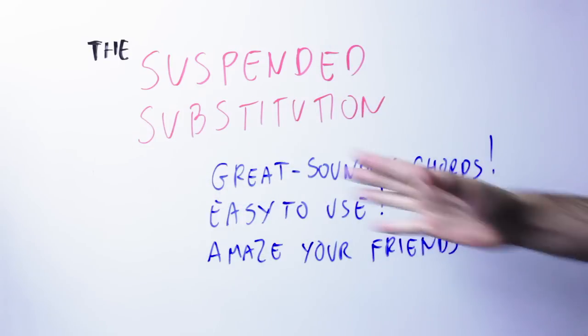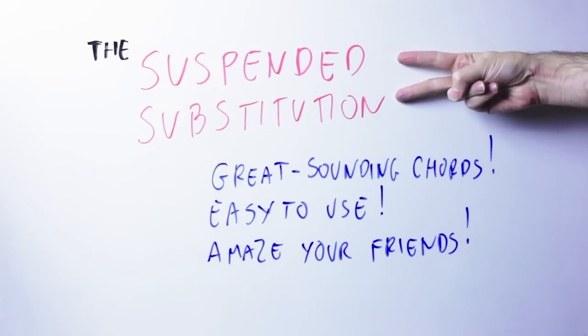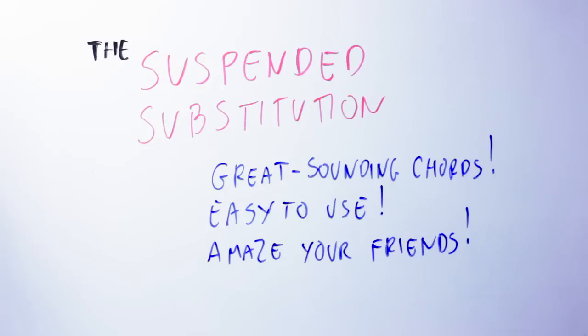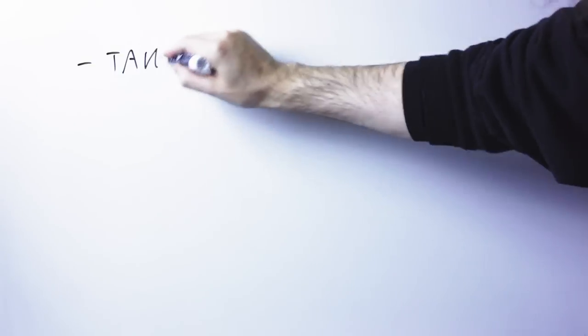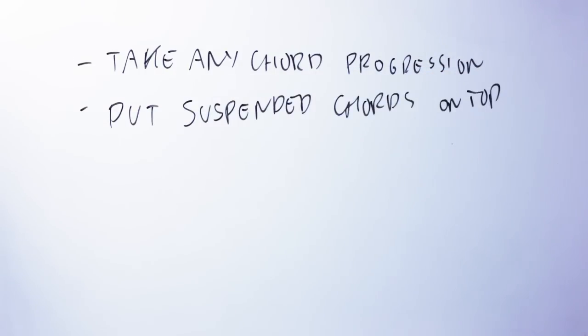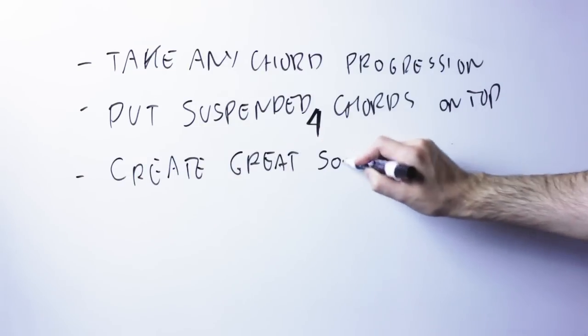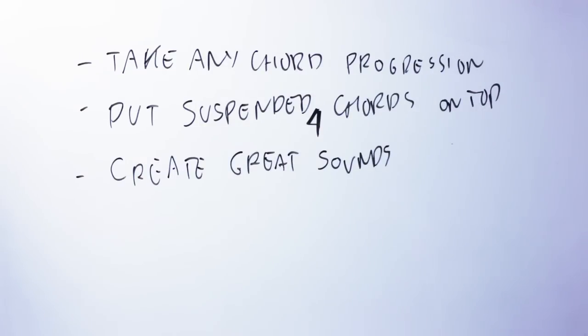Hello Internets! Nice to see you! Today I'm going to show you what I call the suspended substitution. Basically, you're going to take any kind of chord and any chord progression and then put on top suspended fourth chords that work well with the chord progression you are playing and create this kind of atmospheric effect.